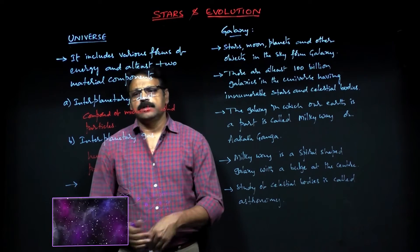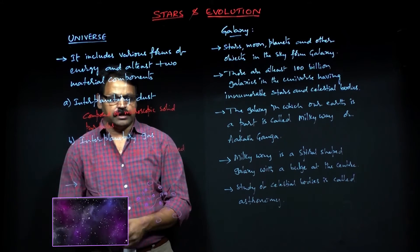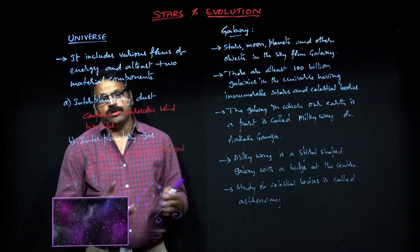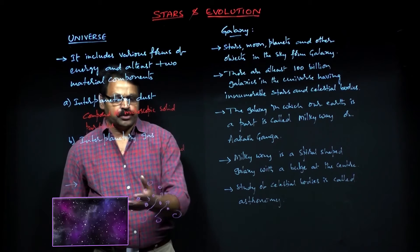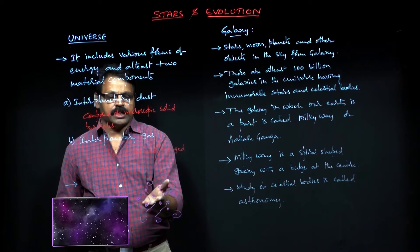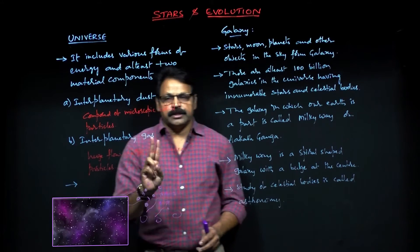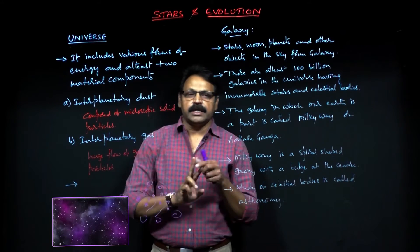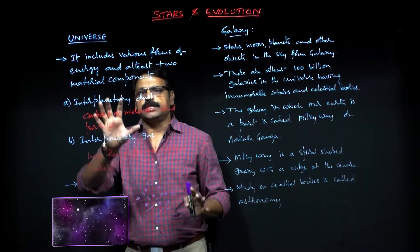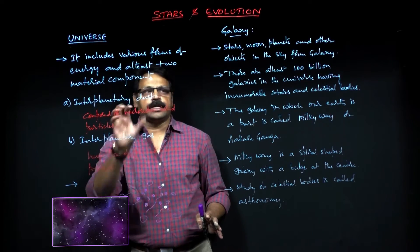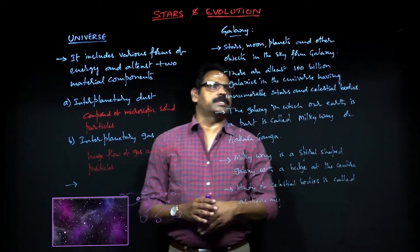So you can have solid particles and a huge flow of gas and charged particles — the gas is flowing and materialistic particles are moving at great speeds. This huge flow of gas and charged particles is called interplanetary gas. As a whole, the universe is made of two major things: energy and material components, with at least two material components. Moving to the sub-level of the universe, stars, moon, planets, and other objects in the sky form a galaxy.